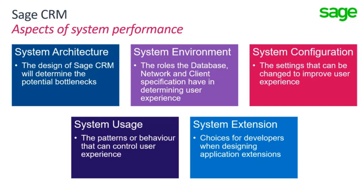There are also areas around general system configuration — the choices a system administrator can make to avoid unnecessary tasks that impact performance. Then we have choices that users and the business can make: are there patterns of behavior that are self-defeating in the way people use the system? Finally, there are choices made when extending the system. That's not a major topic today, but it nevertheless needs to be included.